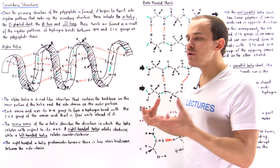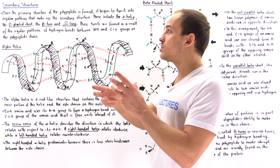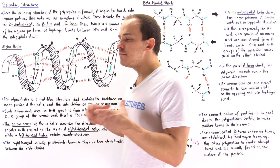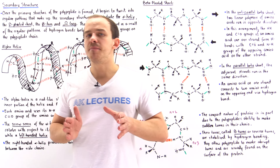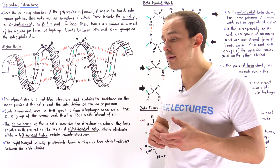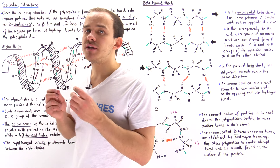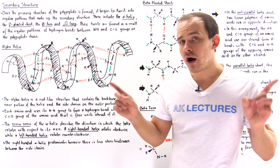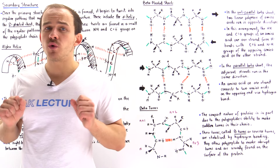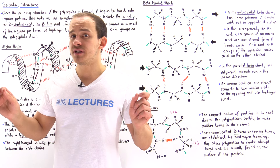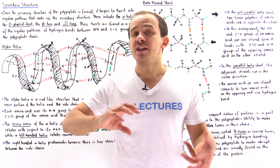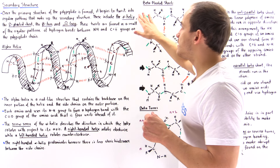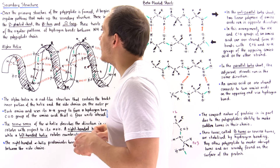How exactly does the polypeptide begin to twist to form these four different types of structures? Inside the polypeptide, we have different bonds. The peptide bonds hold the amino acids together and have a double bond character, meaning they don't rotate. But all the other single bonds inside the polypeptide chain do rotate, and it's the rotation of these single bonds that allows the linear polypeptide to fold into the beta pleated sheet, alpha helix, beta turn, and omega loop.